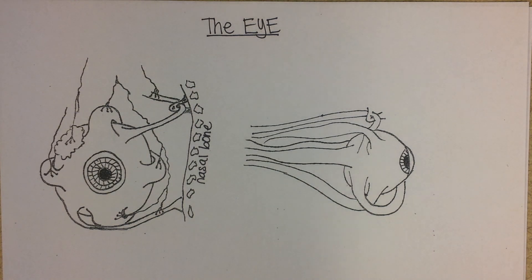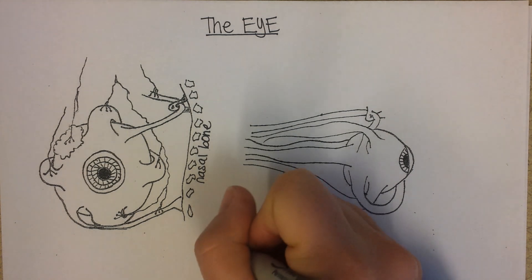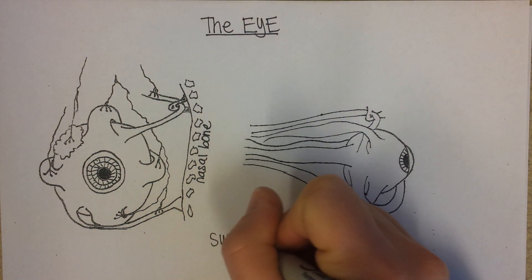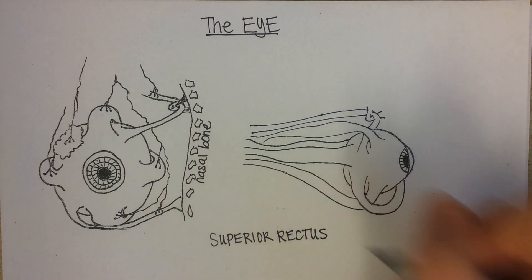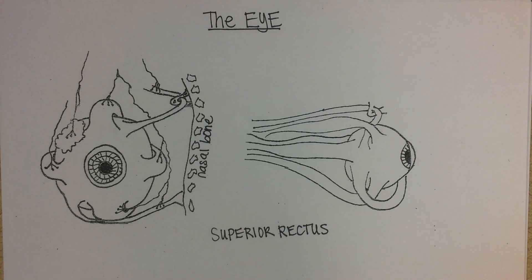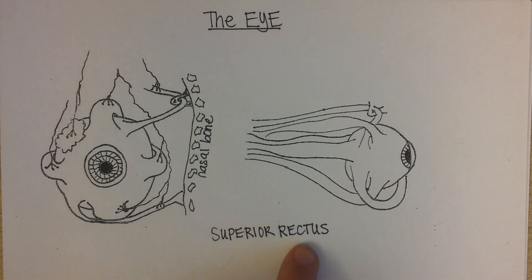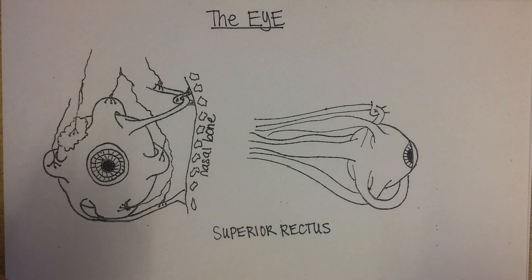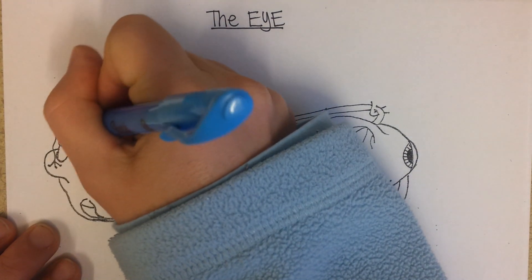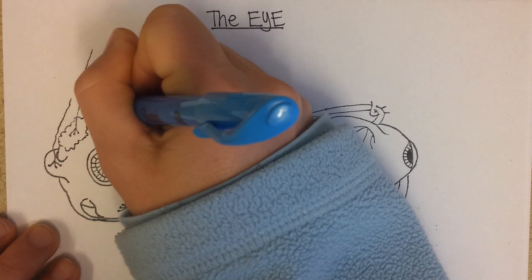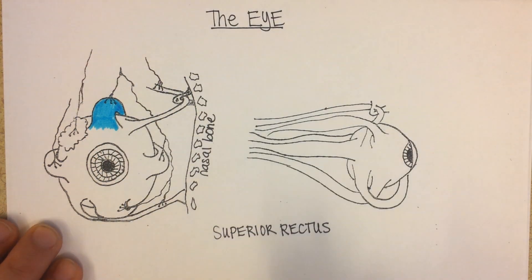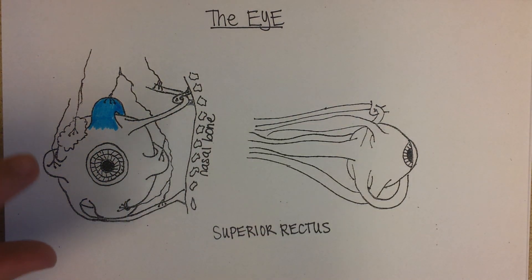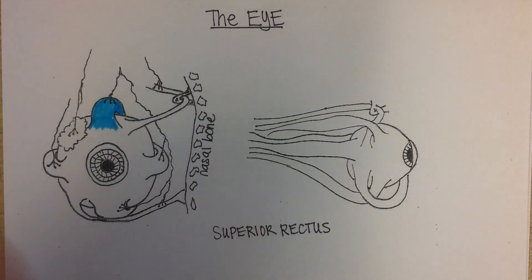There are six muscles that move your eye. The first is called the superior rectus muscle. Superior means above and rectus means straight, so it's a straight muscle that comes off of the top of the eye. When it contracts it's going to pull the eye backward, so you would look up.